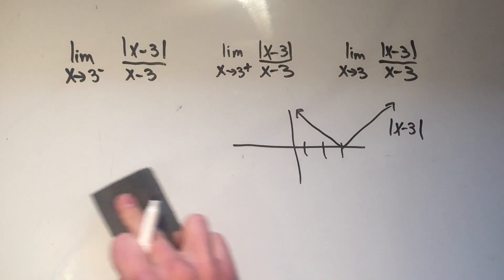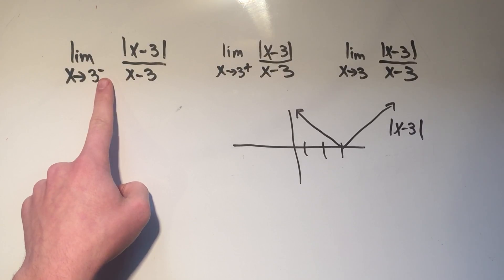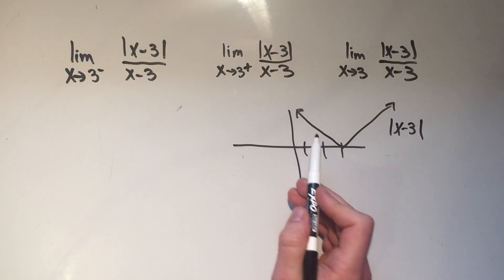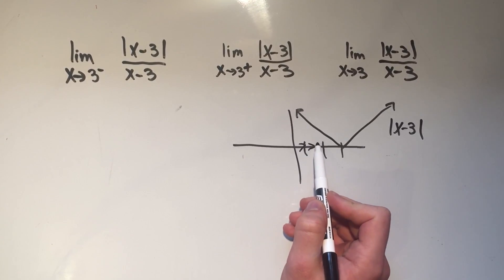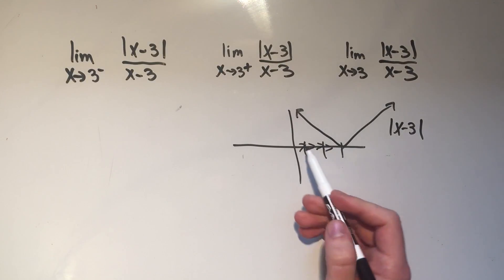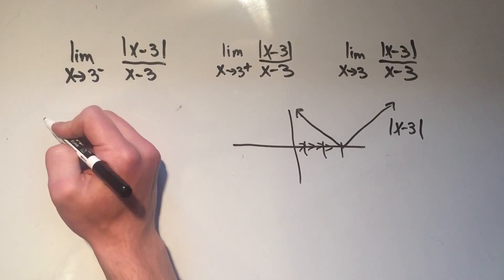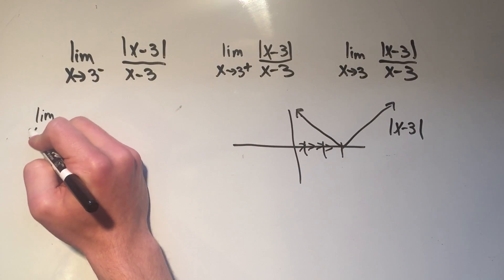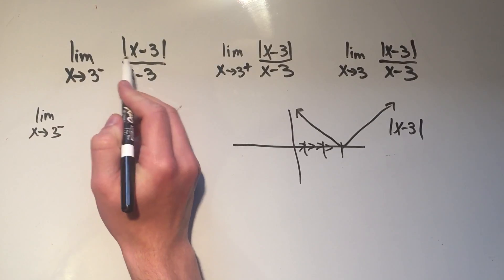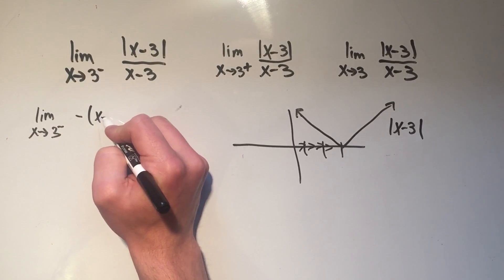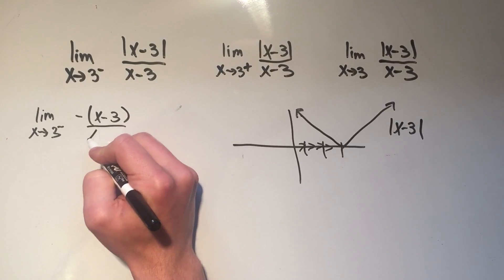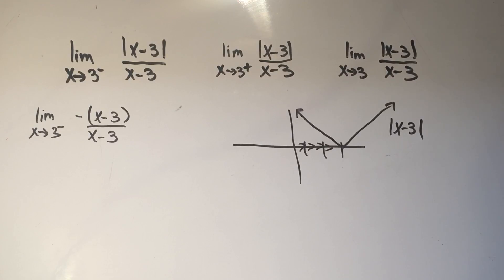And so let's think about this. If I'm approaching three from the left, that's this way, I'm approaching three from the left side. Then I'm going along this part of the graph, and this part of the graph is negatively sloped. So that means when I replace my absolute value signs, I'm going to need a negative in front of them. So the absolute value of x minus three turns into a negative parentheses, and that's just because of this negatively sloped line.